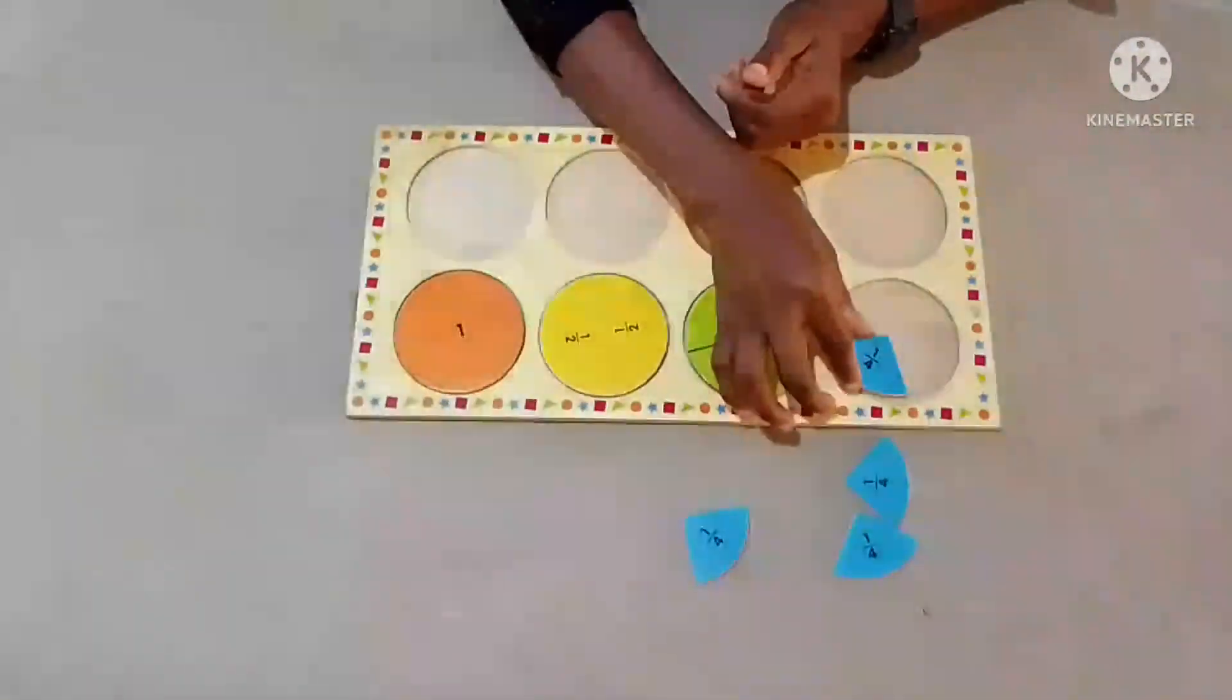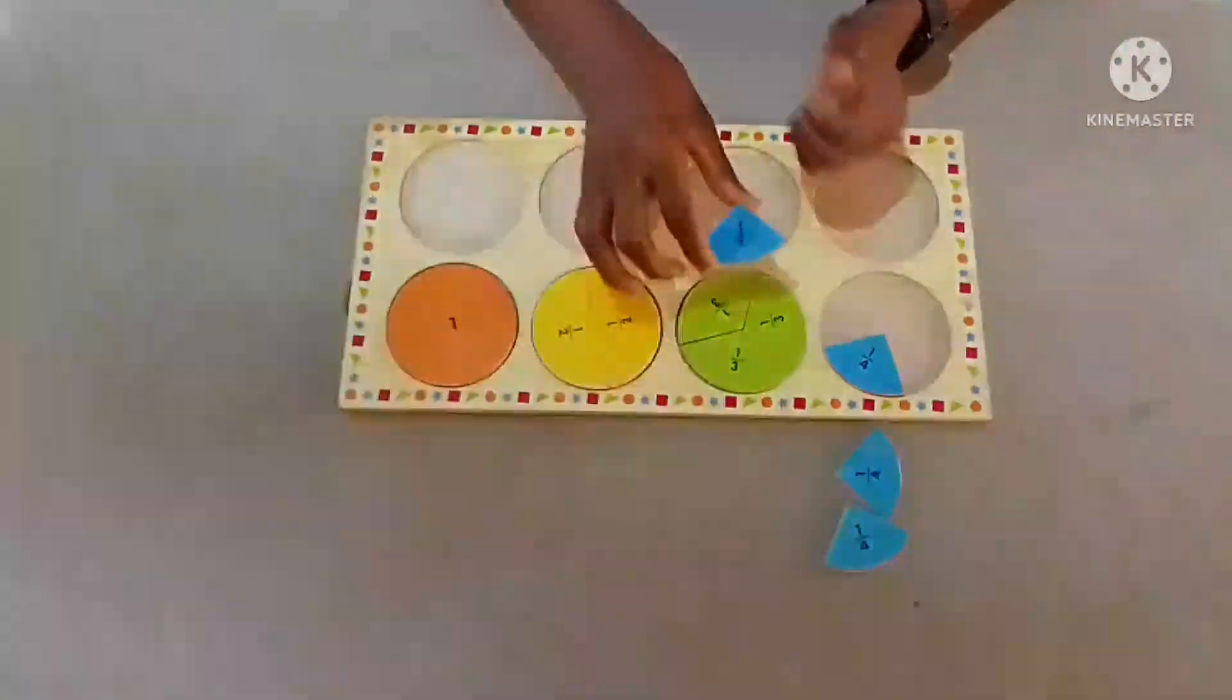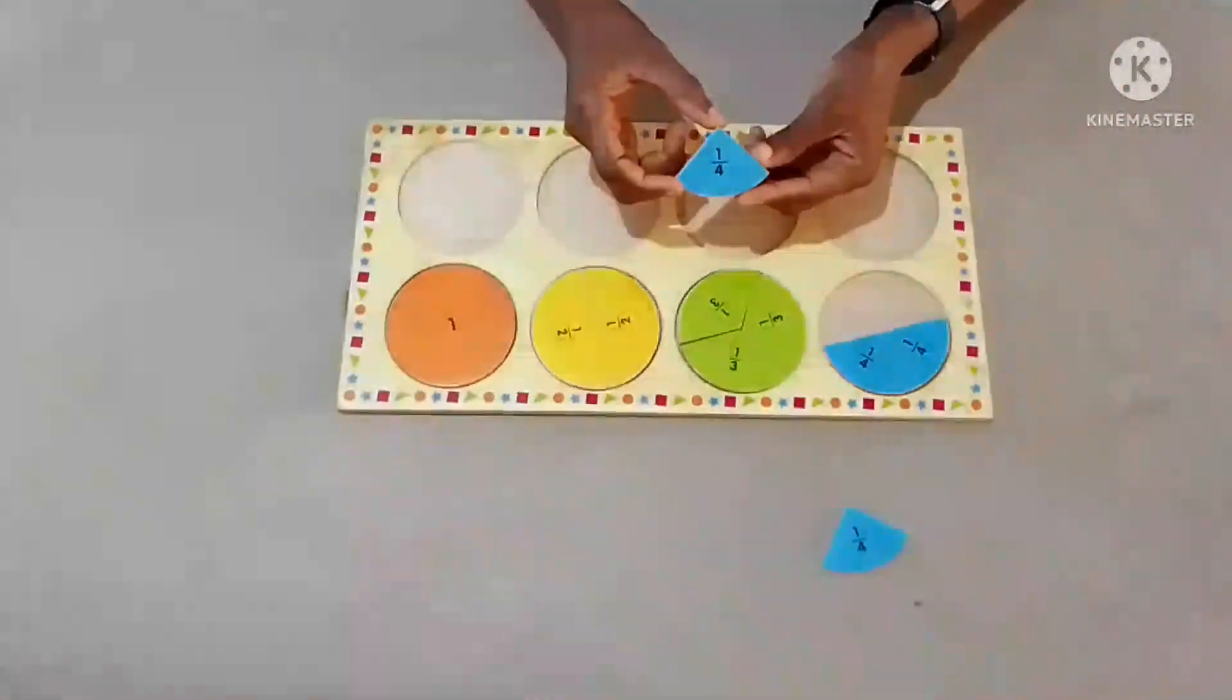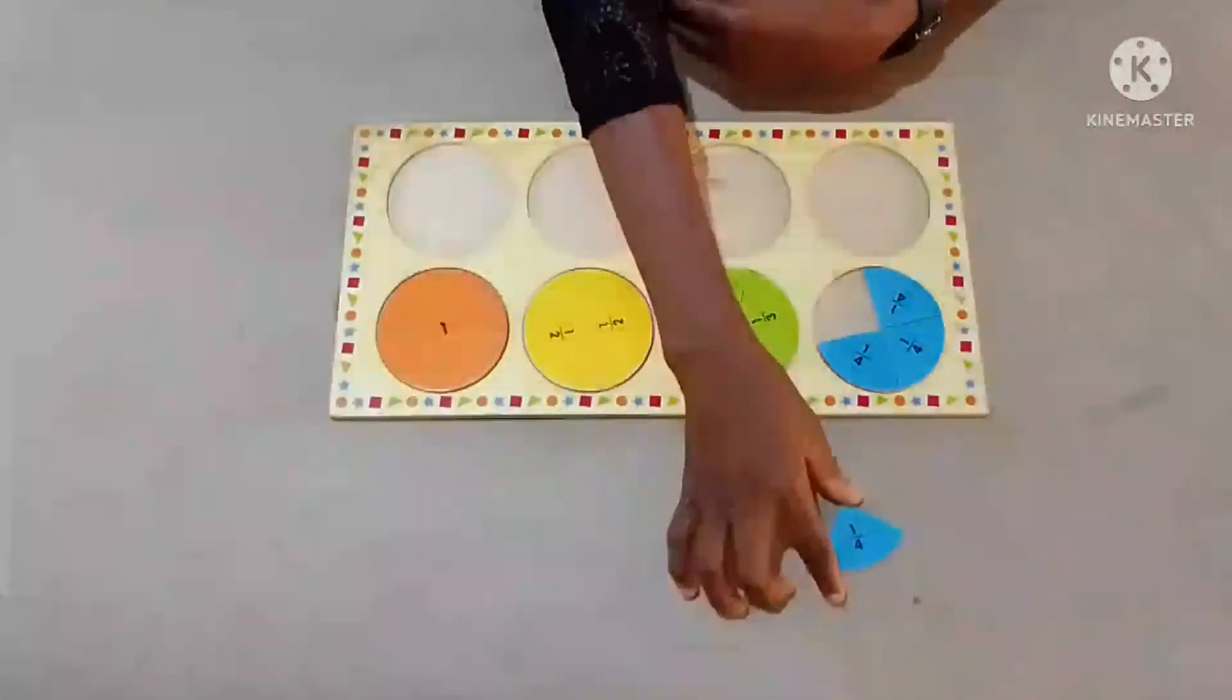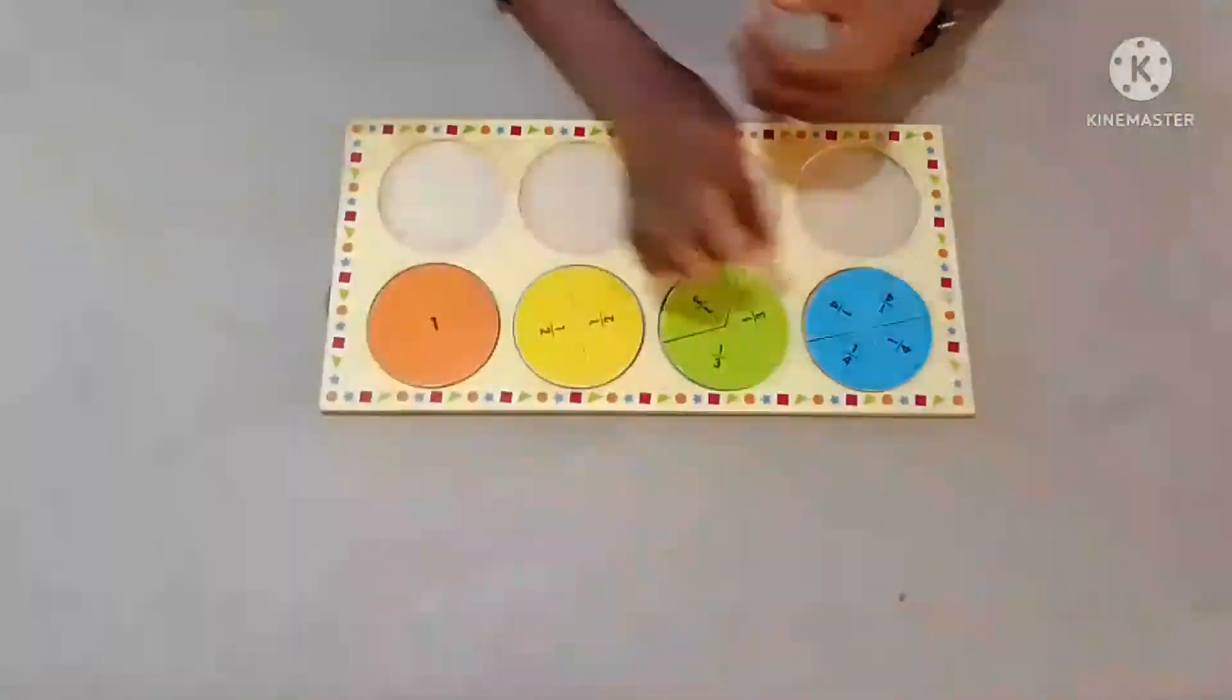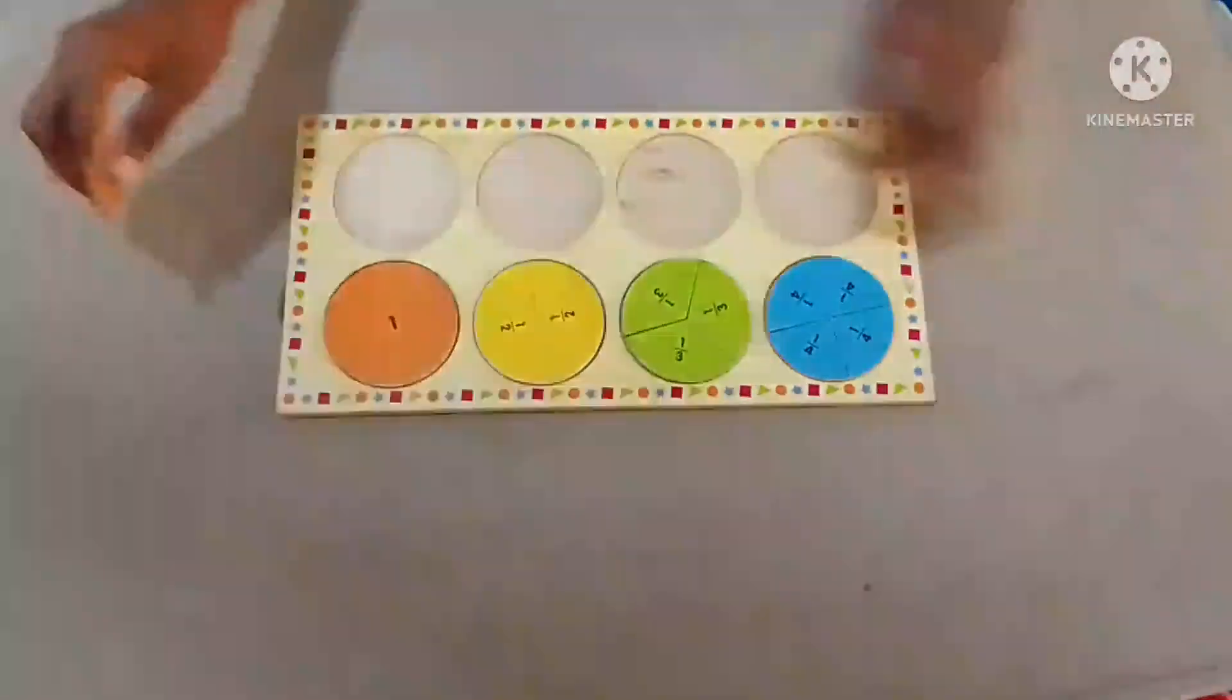This is the one fourth. I will arrange it now, so make sure you pick the right one. You observe with your eyes. So that is how to arrange our fractions. When arranging the fractions, make sure you observe it with your eyes.